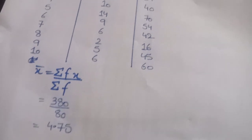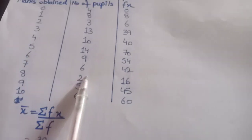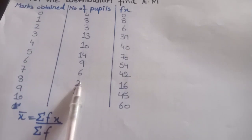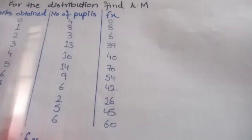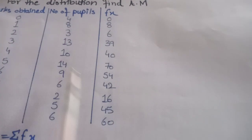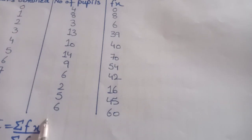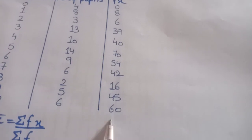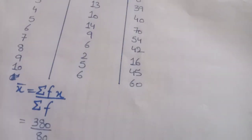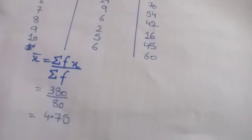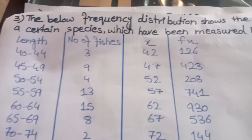This is a very simple question — here both x and f are given. So we need to create one more column for fx, multiply them, then find sum of frequency and sum of fx, and divide to get the arithmetic mean.